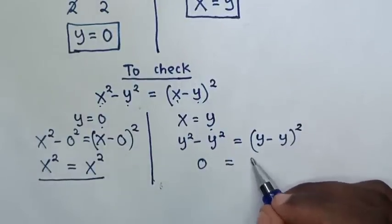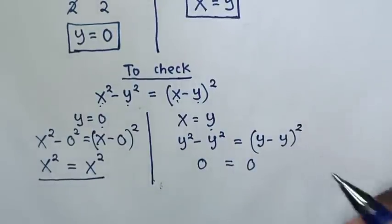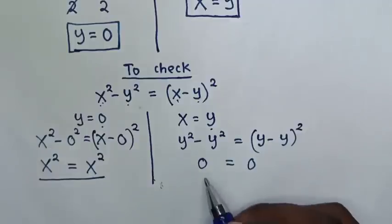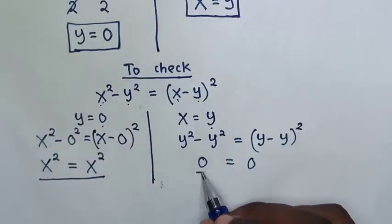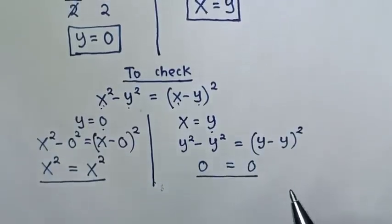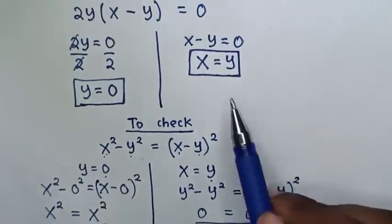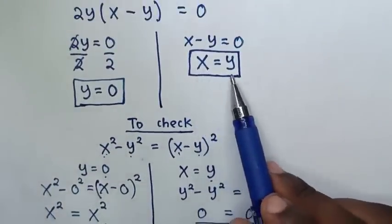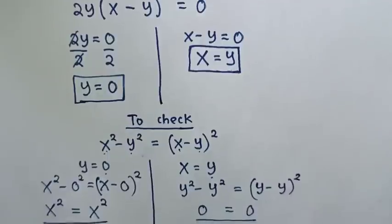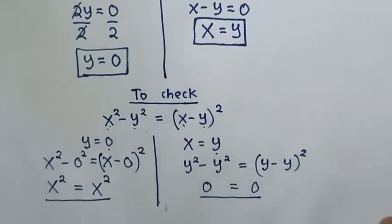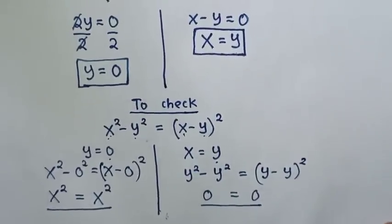As 0 squared is 0, left side and right side are equal. So it's true for the value of x equal to y. Thank you for watching.